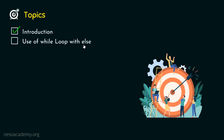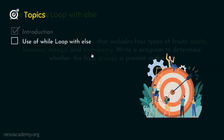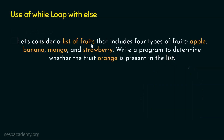Now let's move on to the use of while loop with else. We will understand this with the help of a programming example. Let's consider a list of fruits that includes four types: apple, banana, mango, and strawberry. Write a program to determine whether the fruit orange is present in the list or not. We need to check whether orange is available in this list of four fruits.